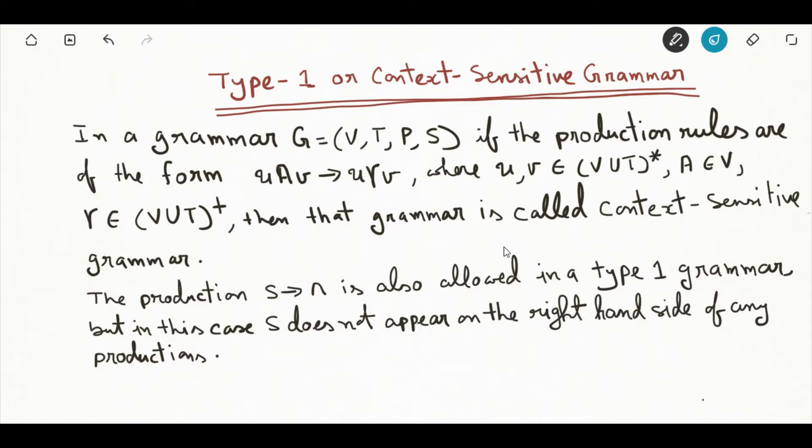Let us consider this production form where uav is rewritten as uγv, where u and v belong to star closure of V union T, a belongs to the non-terminal alphabet, and gamma belongs to positive closure of V union T, meaning gamma can't be null.